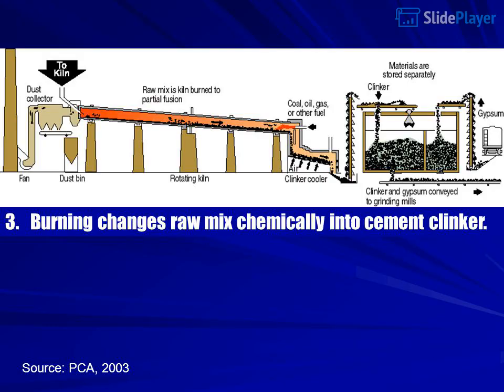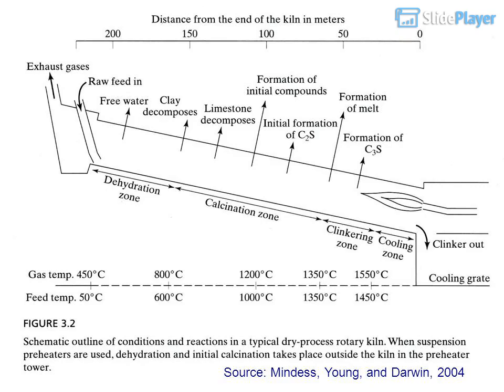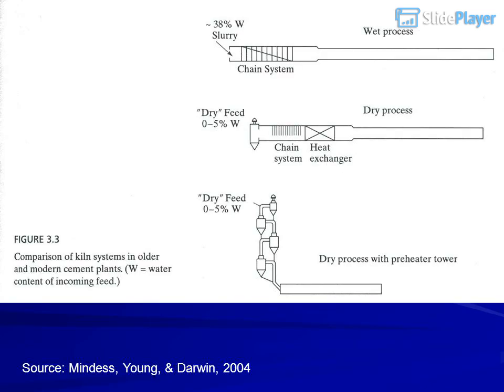Step 3: Burning changes the raw mix chemically into cement clinker. Source: PCA 2003, Figure 2-3, steps in the traditional manufacture of Portland cement. Source: Mindess, Young, and Darwin 2004.